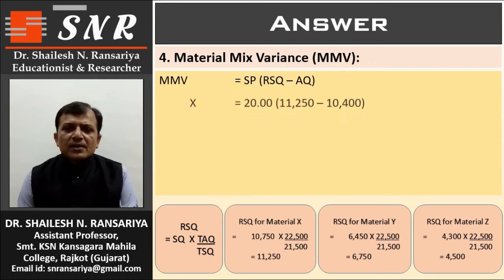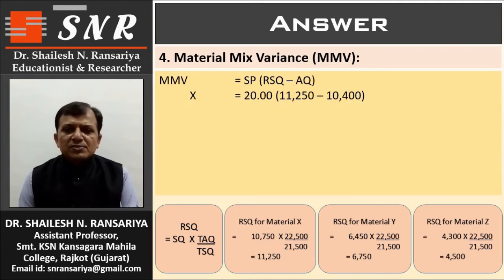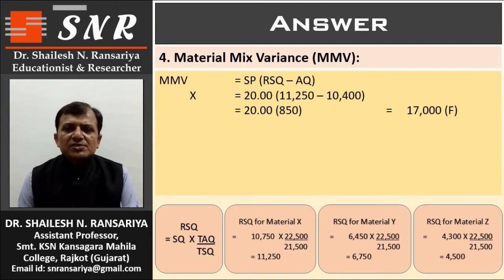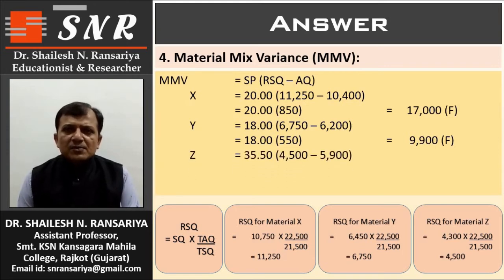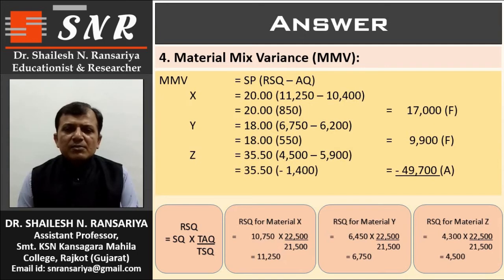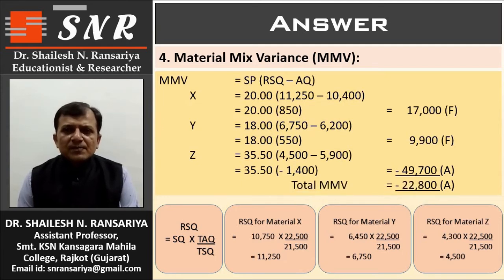Now MMV calculation. For X: SP 20 × (RSQ 11,250 − AQ 10,400) = 20 × 850 = 17,000 favorable. For Y: SP 18 × (RSQ 6,750 − AQ 6,200) = 18 × 550 = 9,900 favorable. For Z: 35.5 × (RSQ 4,500 − AQ 5,900) = 35.5 × (−1,400) = −49,700 adverse. Total MMV = −22,800 adverse.